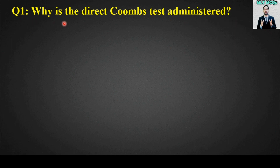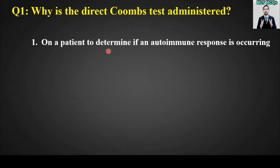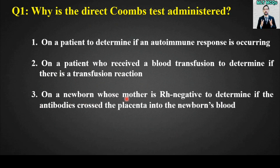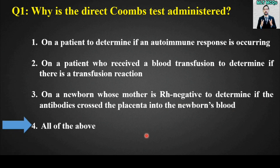MCQ number one: Why is the direct Coombs test administered? Options: (A) On a patient to determine if an autoimmune response is occurring; (B) On a patient who received a blood transfusion to determine if there is a transfusion reaction; (C) On a newborn whose mother is Rh negative to determine if the antibodies crossed the placenta into the newborn's blood; or (D) All of the above.